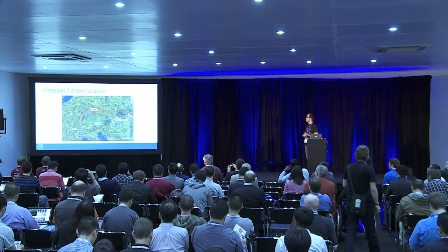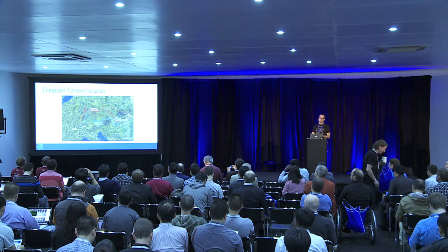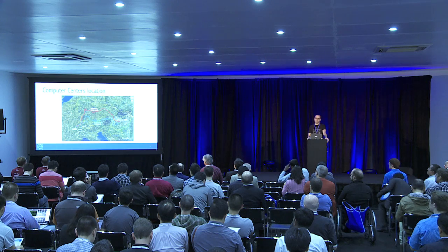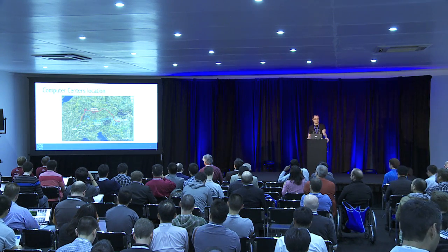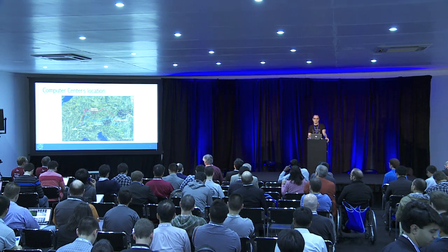The two centers are separated by more than 1,000 kilometers. They are connected by two independent fibers that each support a bandwidth of 100 gigabits per second. All infrastructure management is done in Geneva, and we only have the necessary personnel in Budapest for repairs.